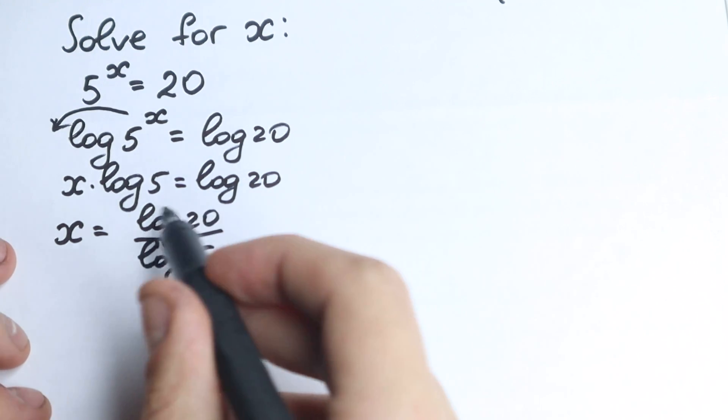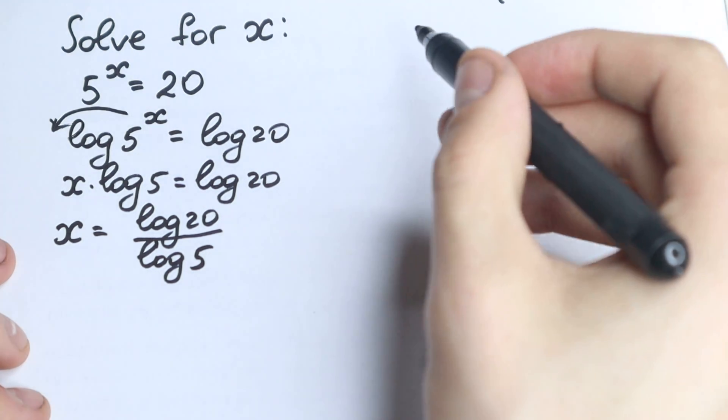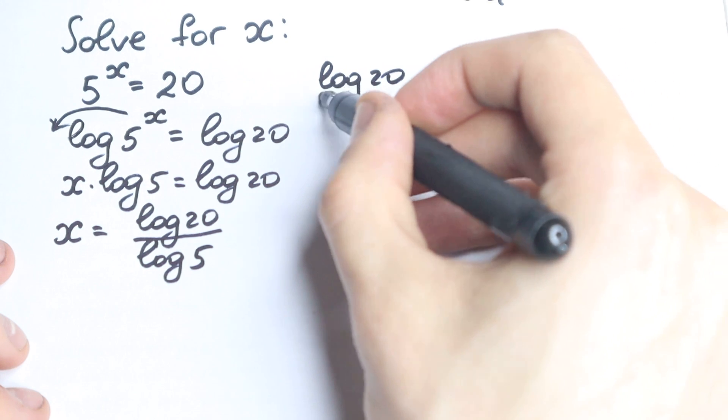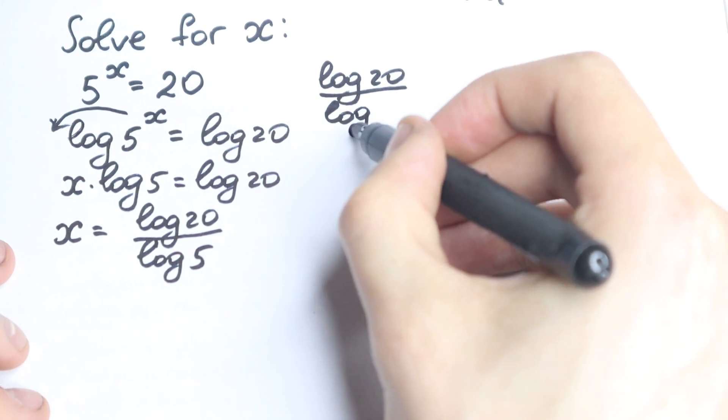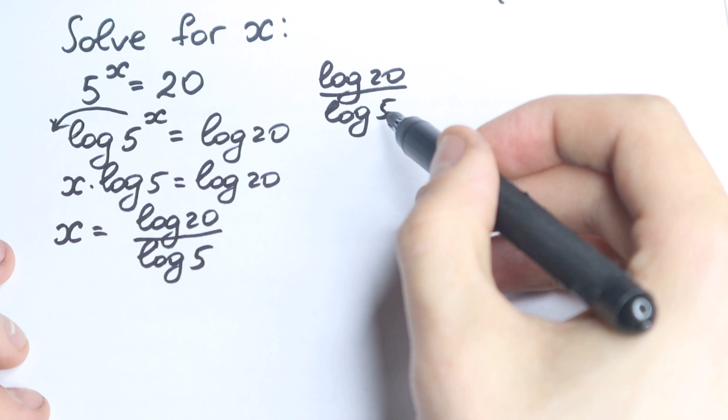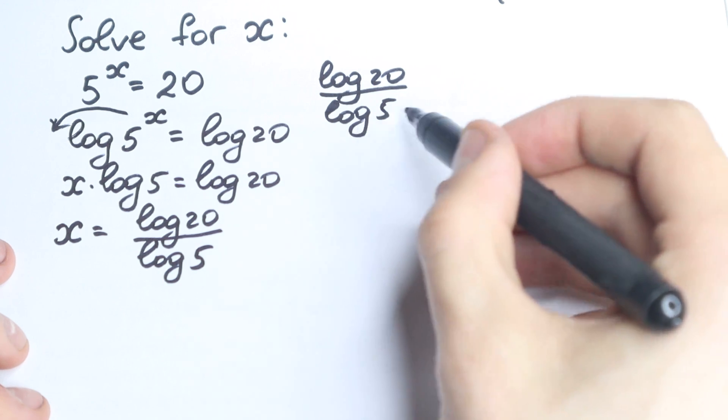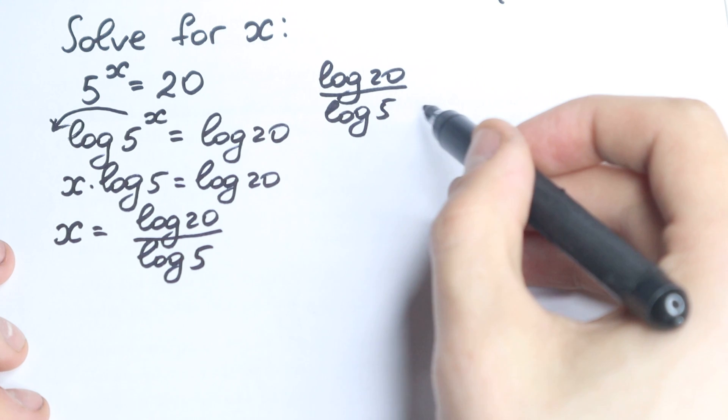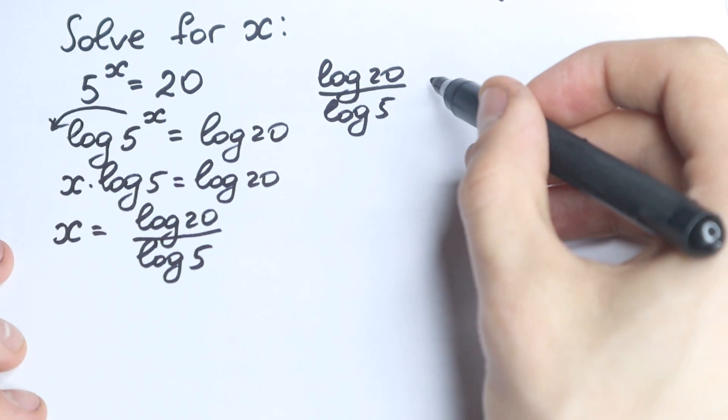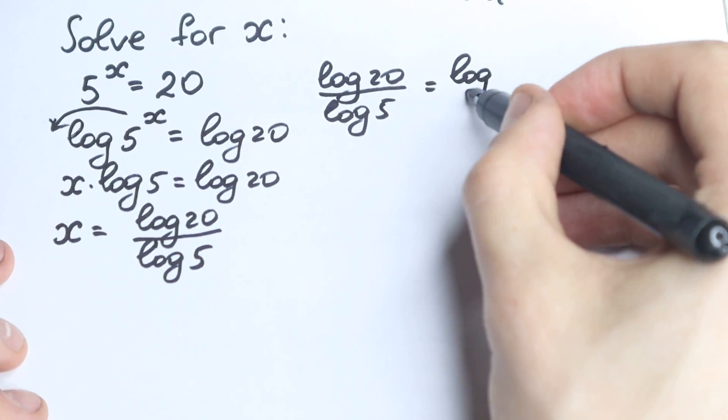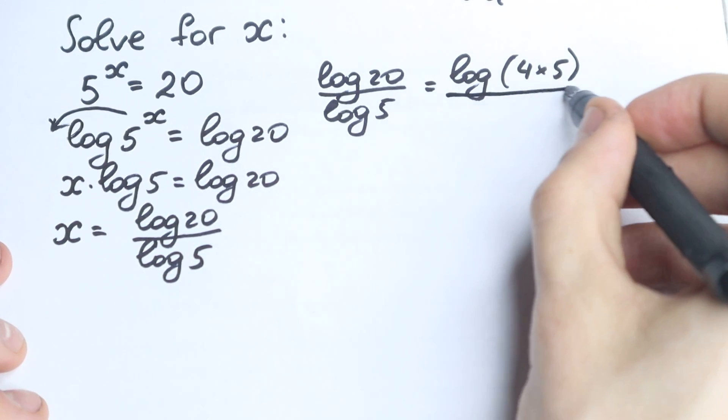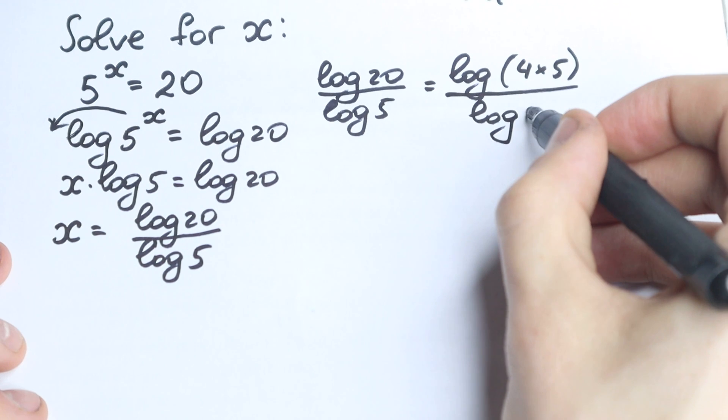Let's simplify this expression log 20 over log 5. In our denominator we have 5, so it's not a good number, we cannot express this as a product. But 20 we can express as a product, so we can write it as 4 times 5. So we have log of 4 times 5 all over log 5.